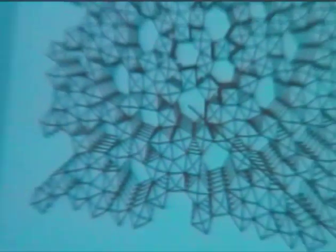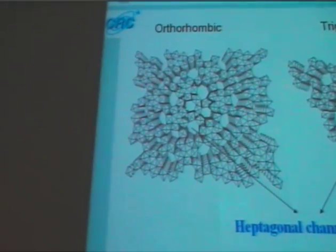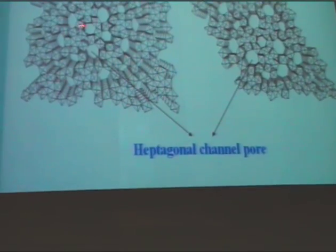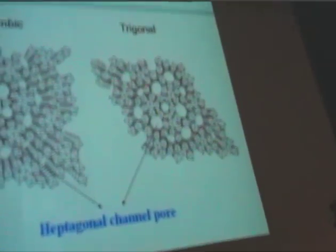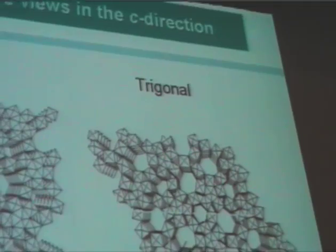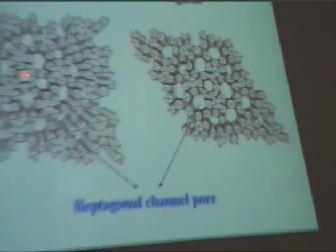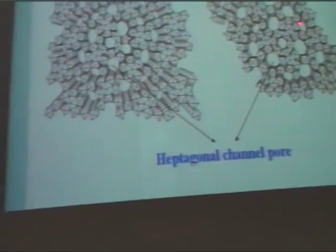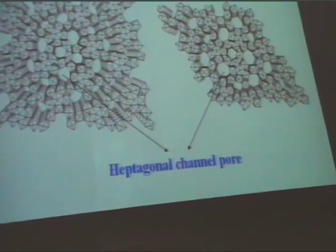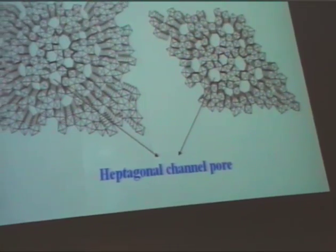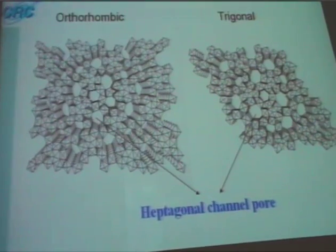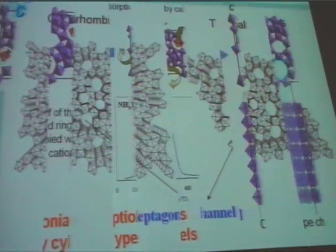Then I'm going to move on to the properties of this material. As you can see, this is the view of the channel structure. You can see some holes, which are the pentagonal units. So we can expect that these holes might be porous — they can accept small molecules, because the size is not so large.